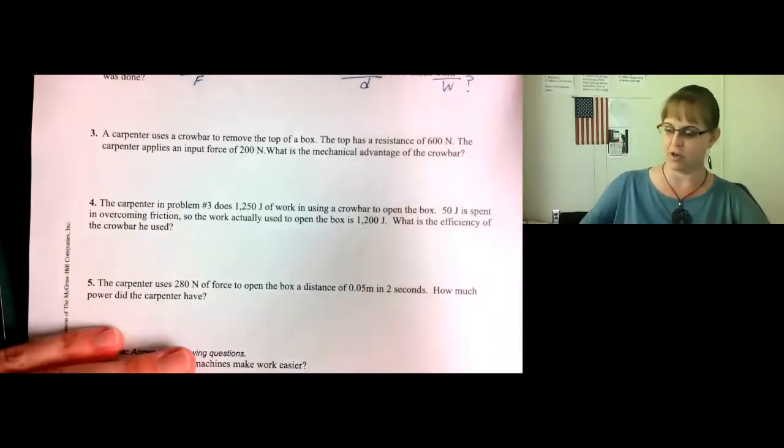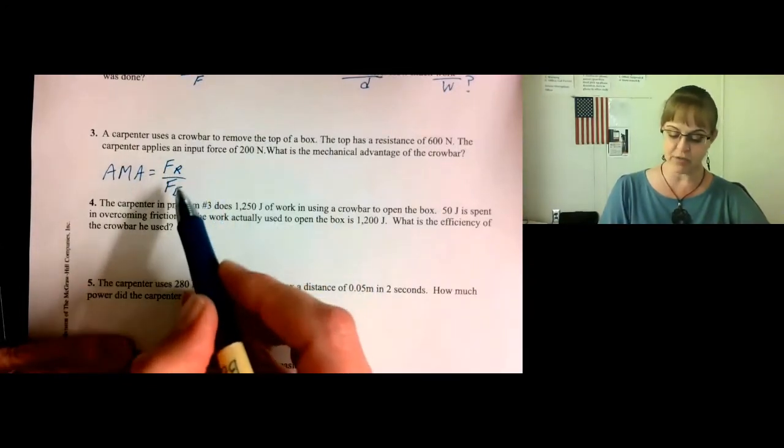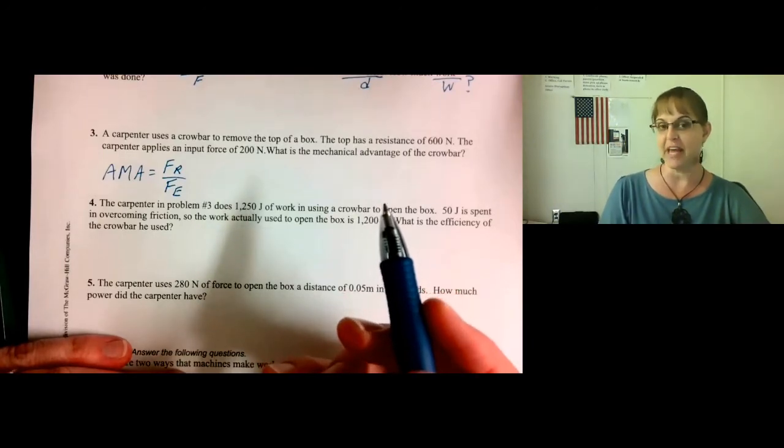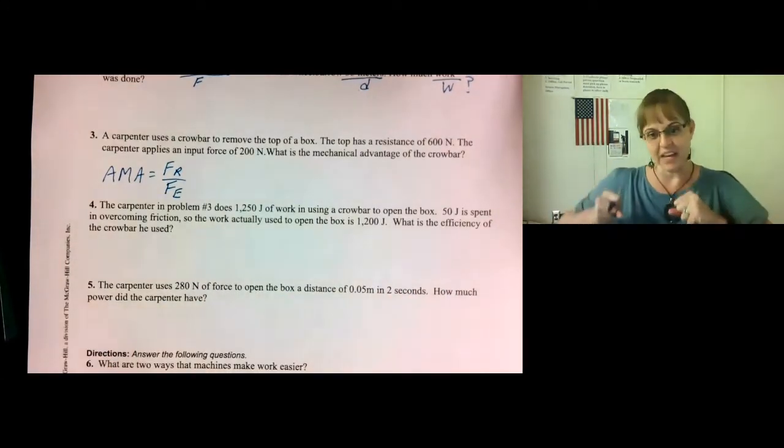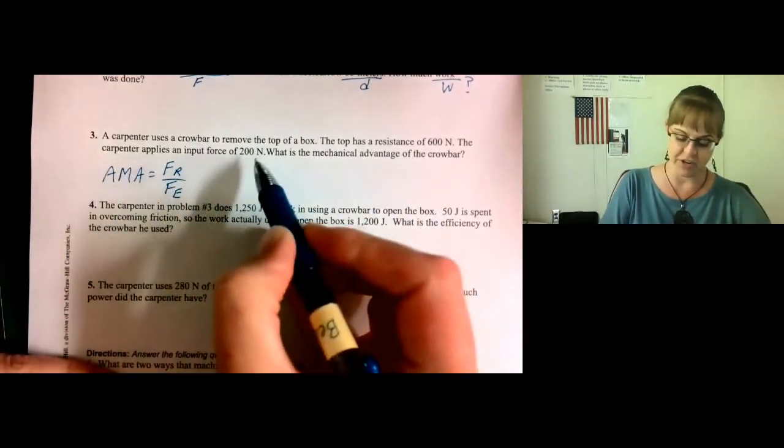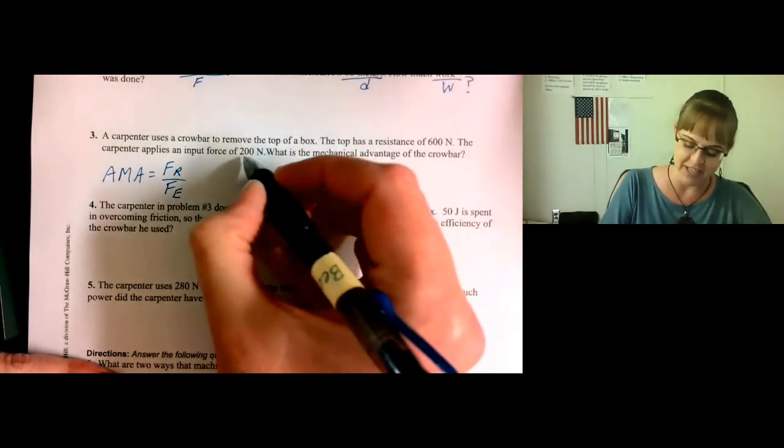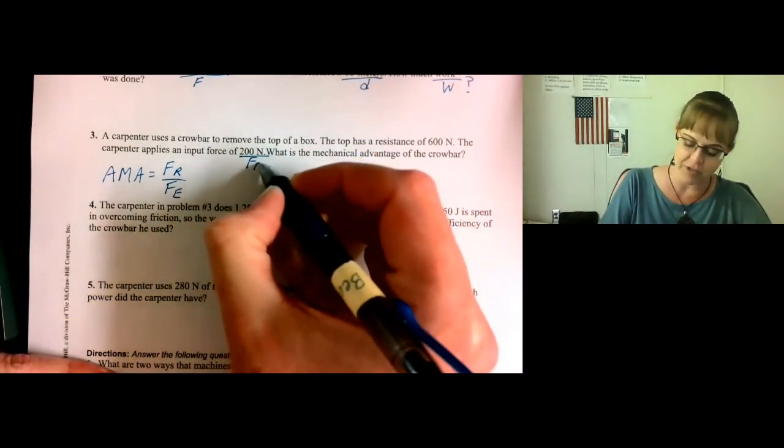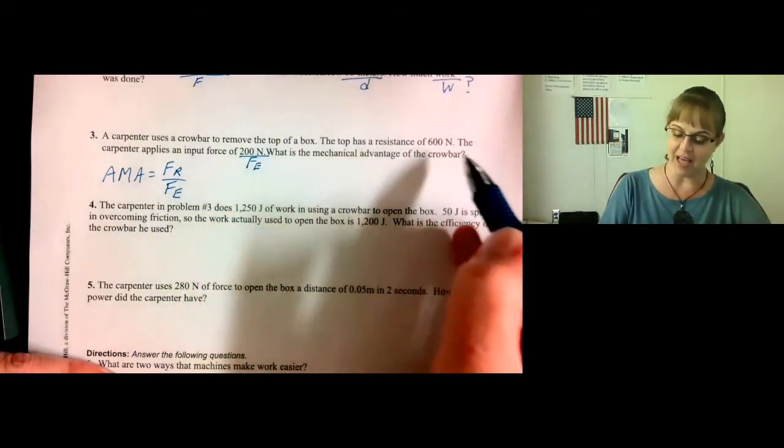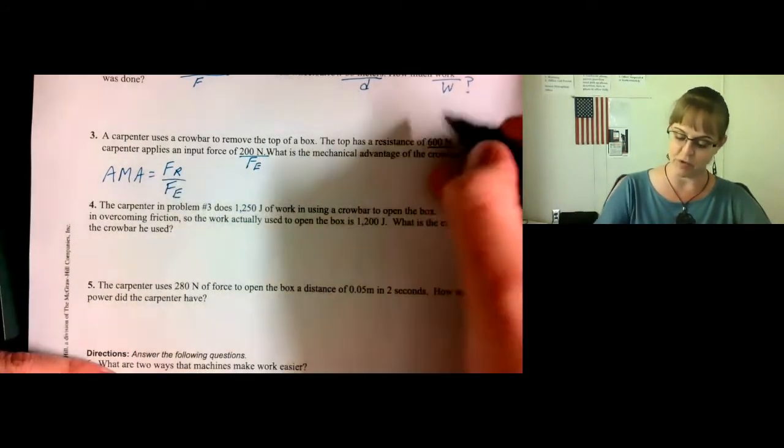Force of resistance over force of effort. Now, we've got to figure out which one is the resistance and which one is the effort. You always put in the effort. The carpenter applied an input force, which is your effort force. So this is your force of effort. The lid of the box has a resistance of 600. Resistance, there you go, force of resistance.